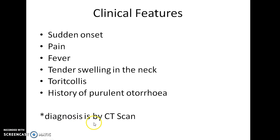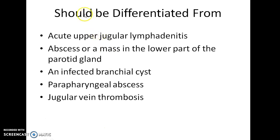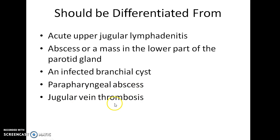The diagnosis is usually by CT scan. It is important that you differentiate Bezold's abscess from acute upper jugular lymphadenitis, abscess or a mass in the lower part of the parotid gland, an infected branchial cyst, parapharyngeal abscess, and jugular vein thrombosis. Bezold's abscess can be differentiated from these by a CT scan.